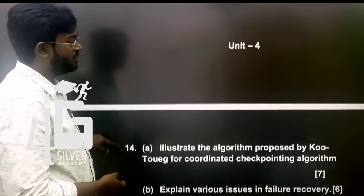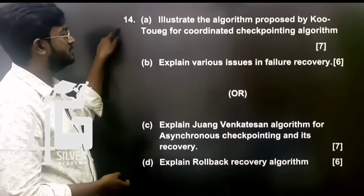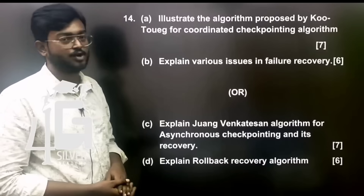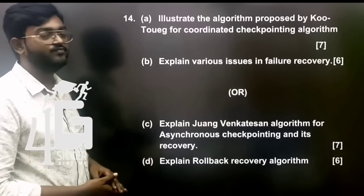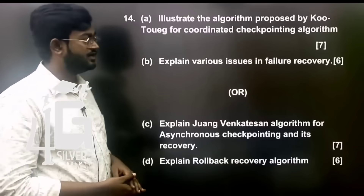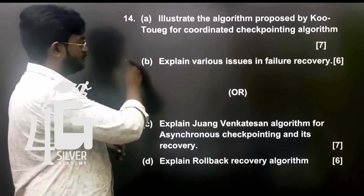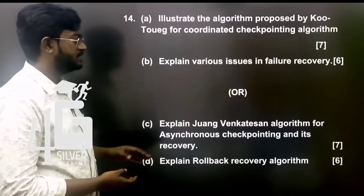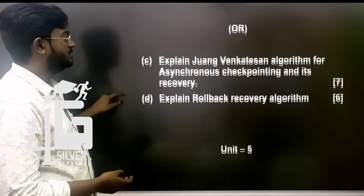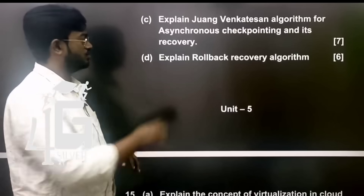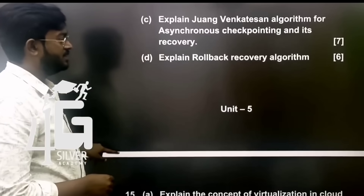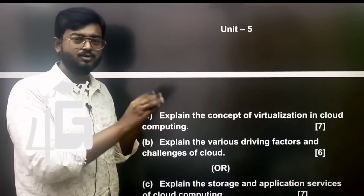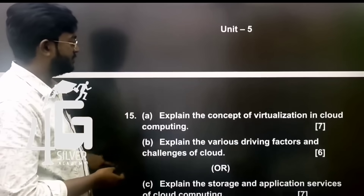Unit 4 Part B important questions: Illustrate the algorithm proposed by QTOK for coordinated checkpointing. Explain various issues of failure recovery. Explain Juang-Venkatesan algorithm for asynchronous checkpointing and its recovery. Explain rollback recovery algorithm.